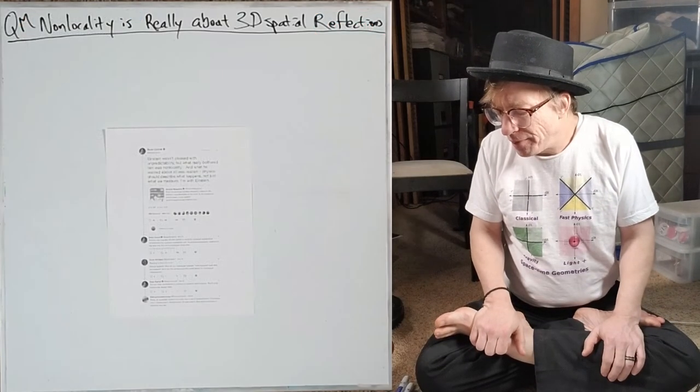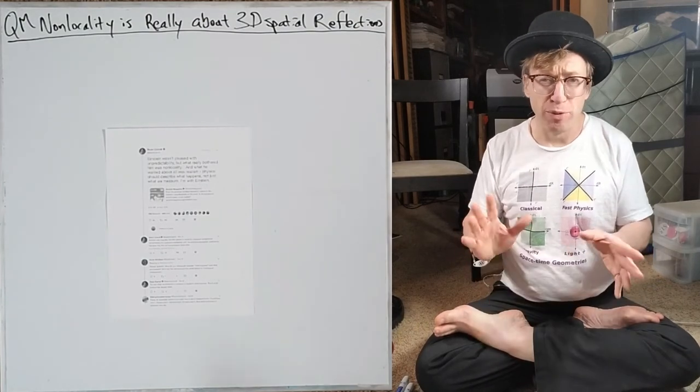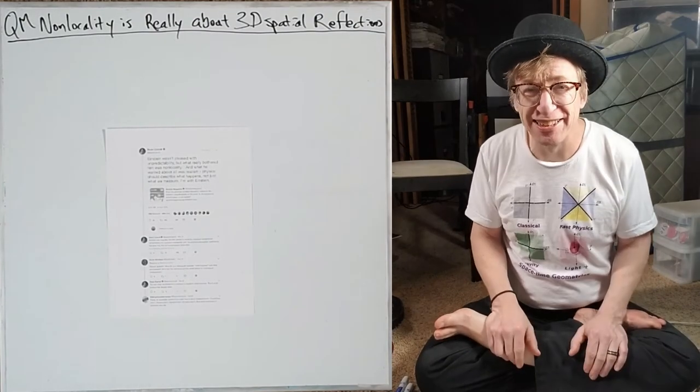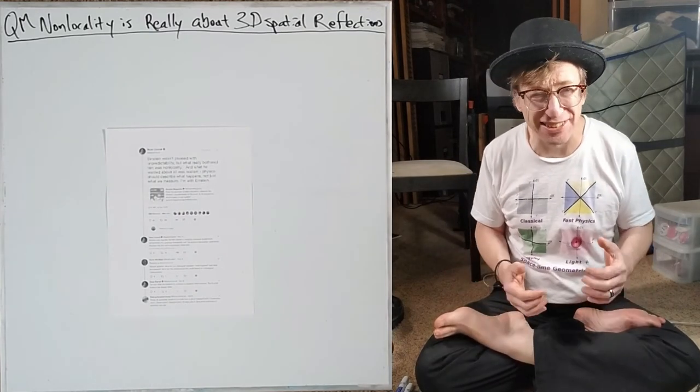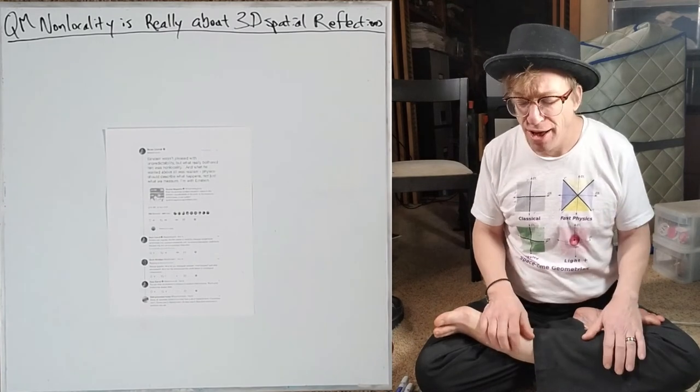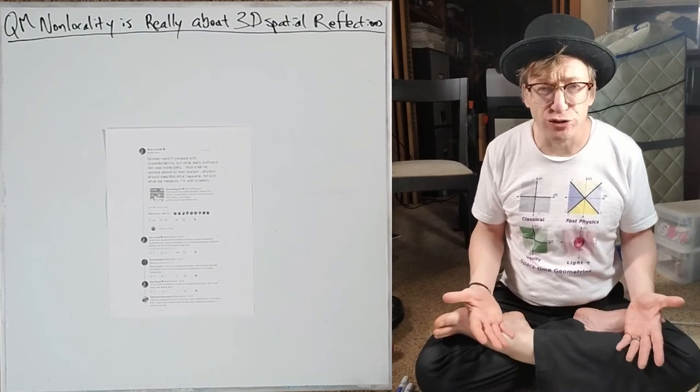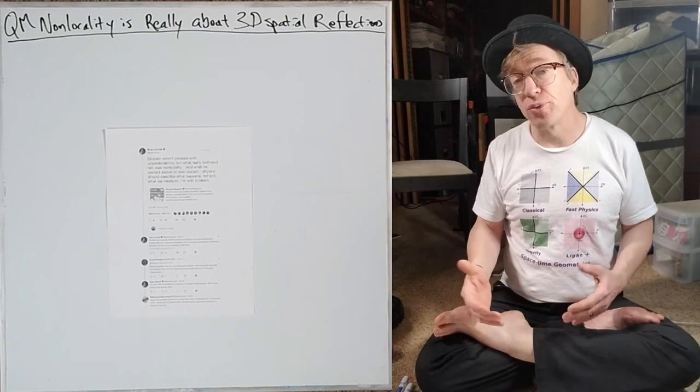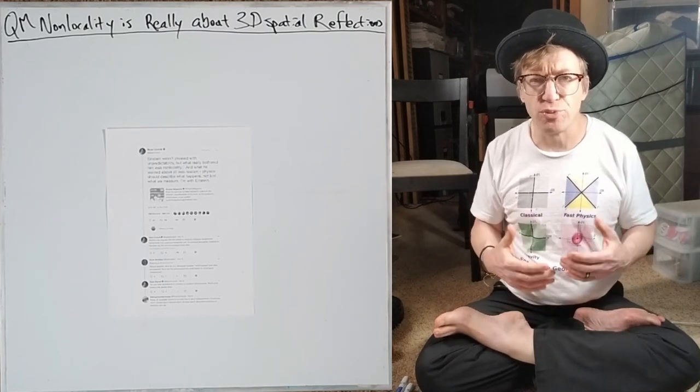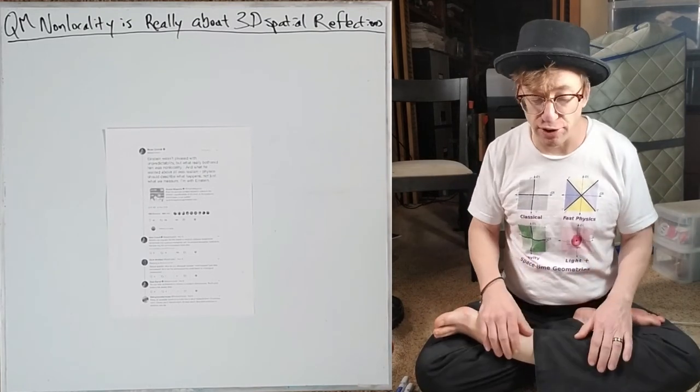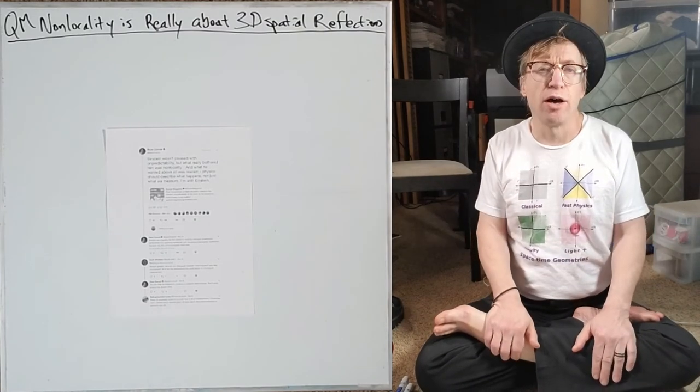I can see why non-locality bothered him and not the probability thing. Einstein helped figure out why the sky is blue - it has to do with fourth order scattering off atoms in the atmosphere. He figured out Brownian motion. Later in his career, he brought in this idea about emissions, which formalized bringing unpredictability into quantum mechanics.